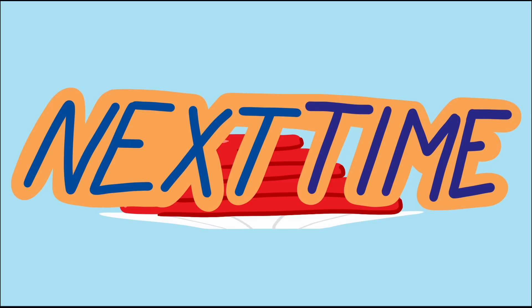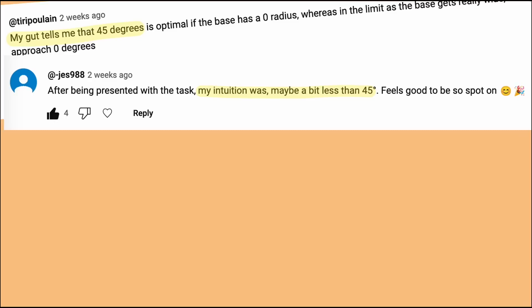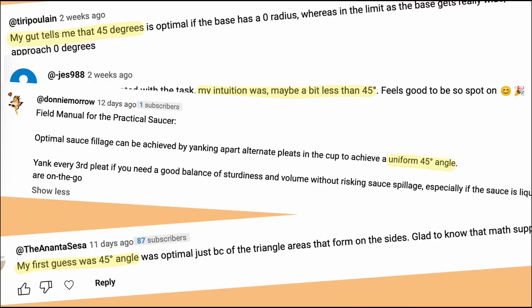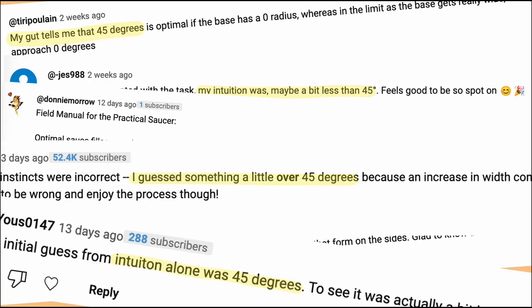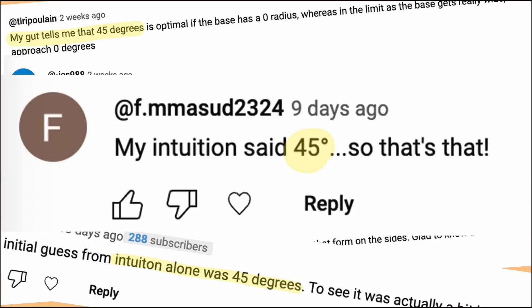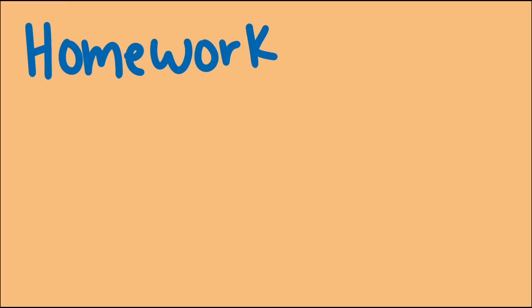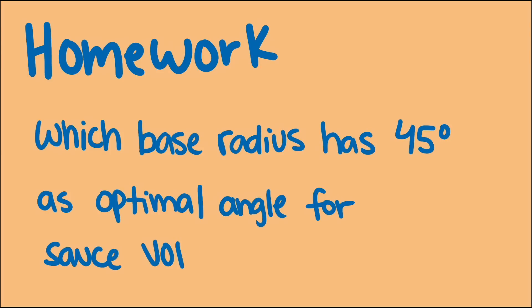Well, there are still improvements we can make. We have to figure out how to get the unfolded cups to stay in the optimal shape when they're full of sauce. But that'll have to wait until next time. We'll end with a chance for you to earn one more sticker for your nerd helmet. Many viewers guessed that the optimal angle for the original problem in the last video was 45 degrees. Well, 45 degrees is the answer for some base radius. So my homework problem for you is to find the base radius of the cup where 45 degrees optimizes the volume of sauce in the cup.